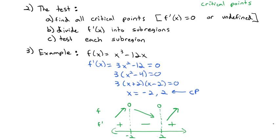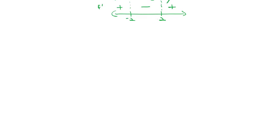Now we know where the graph is increasing, decreasing, and then increasing again, giving us a general idea of the shape. But there's more to the graph than just whether it's increasing or decreasing — it helps to know what direction it is curving. The next thing derivatives tell us about the graph is what we call concavity.